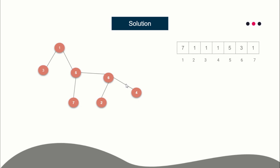How do you find it? First of all, root the tree, and for each node calculate the subtree size of it. Assuming node one is the root, node one has subtree size seven, node five has subtree size five, node six has subtree size three, and so on. First of all, calculate the subtree size of each node.